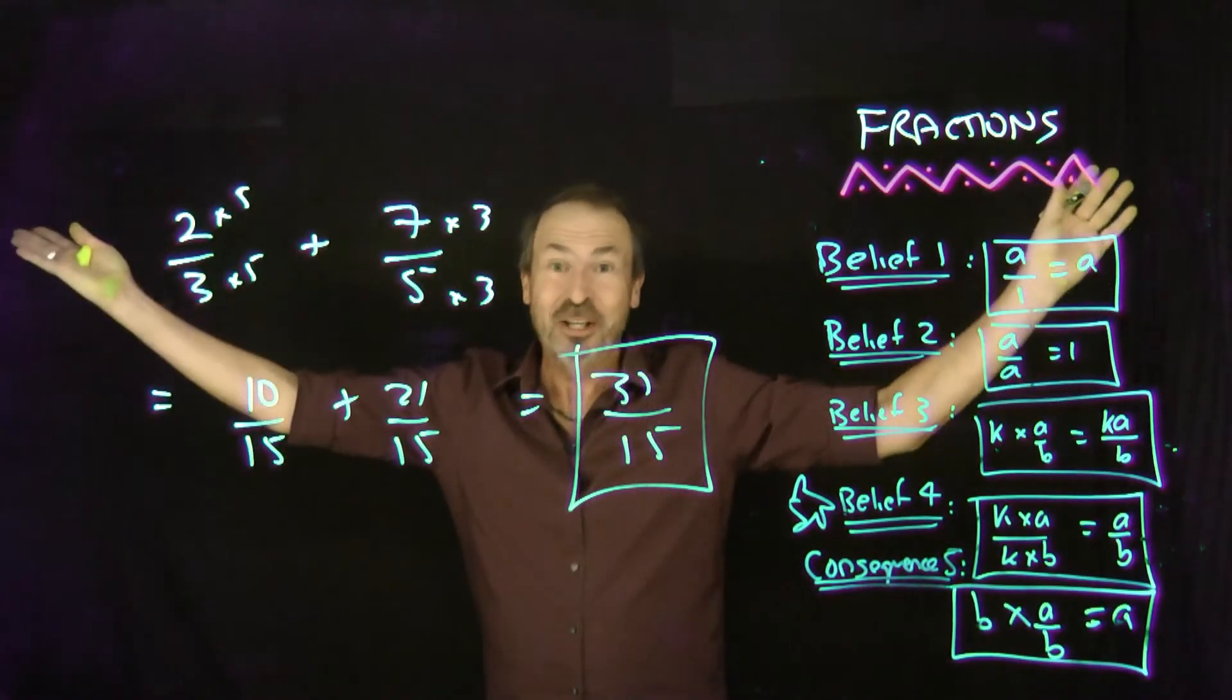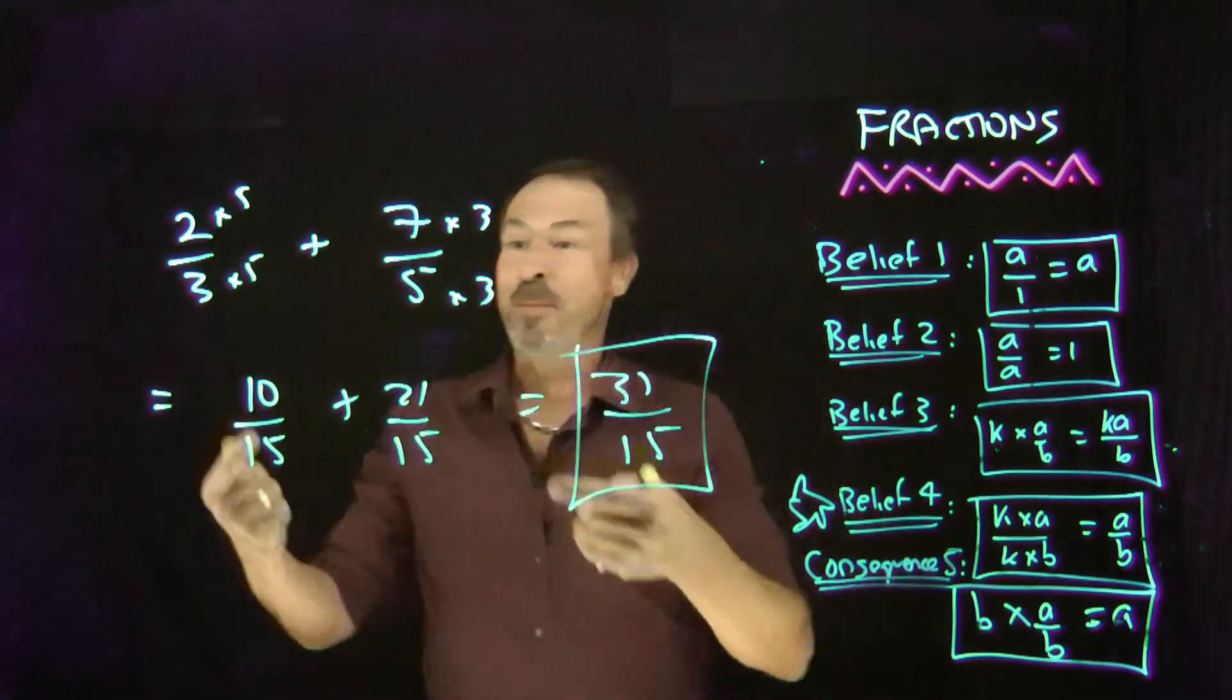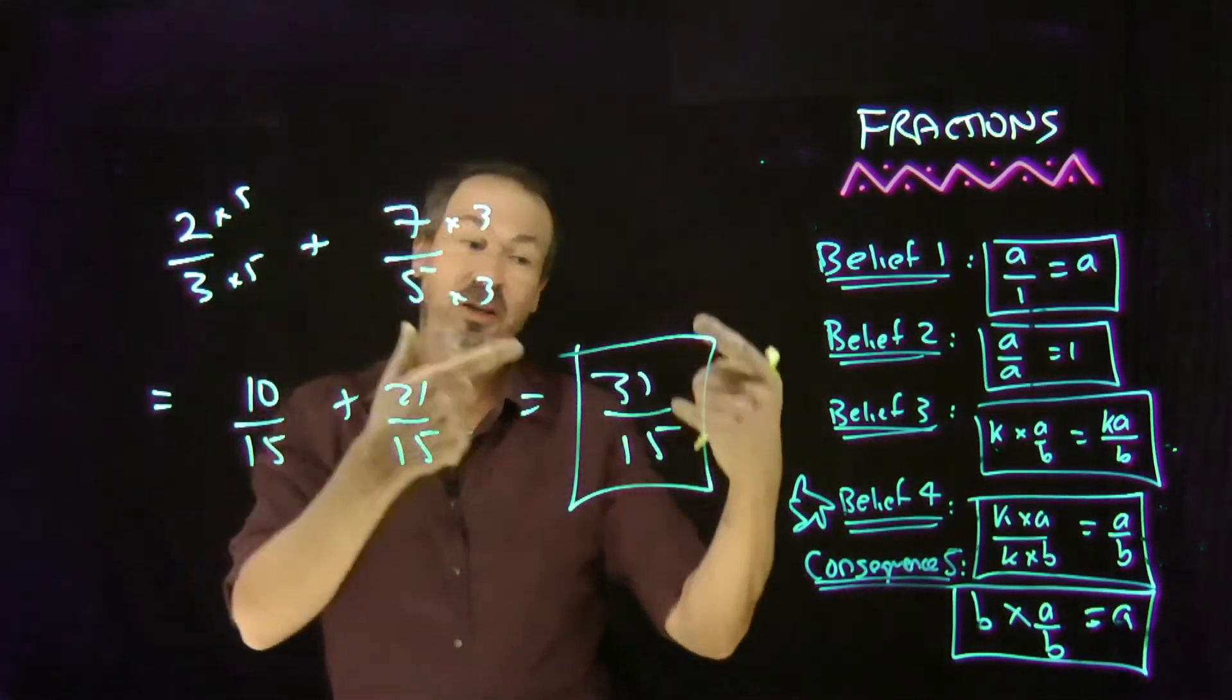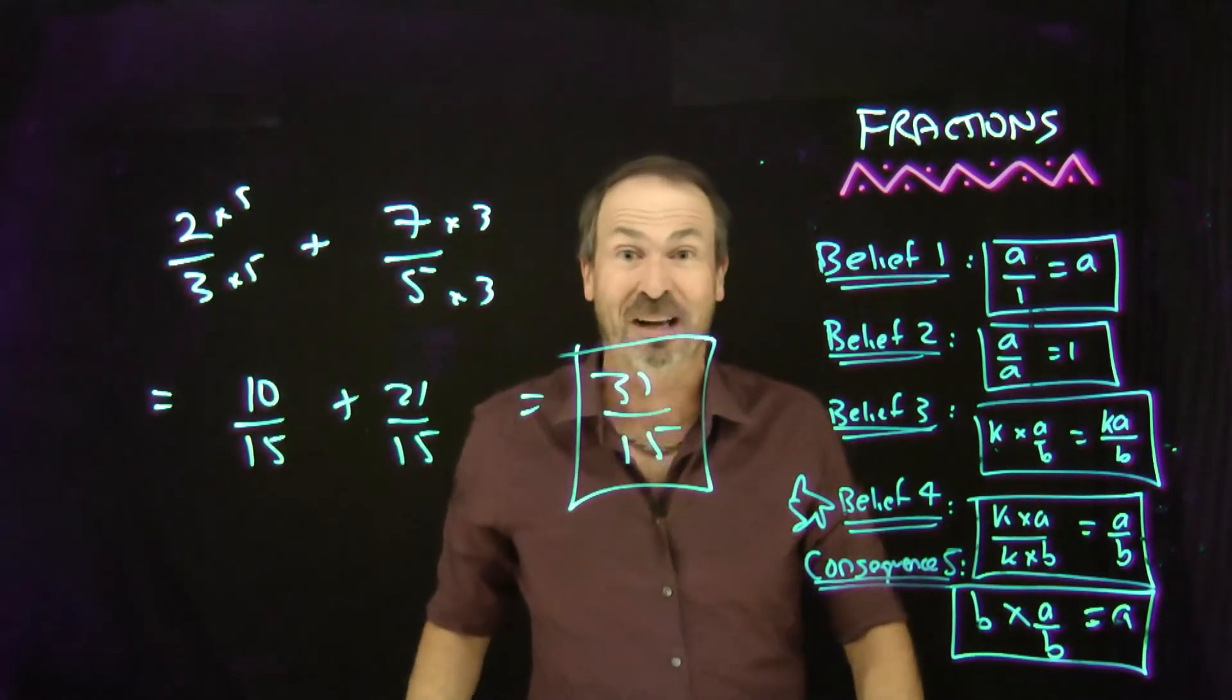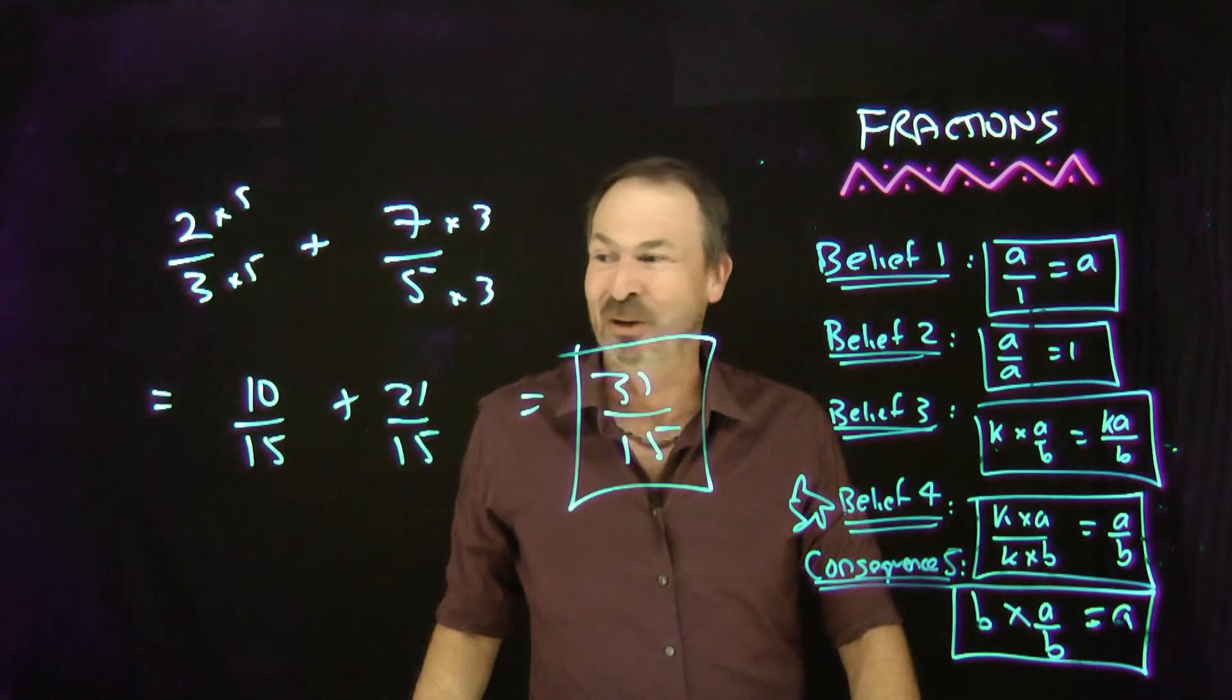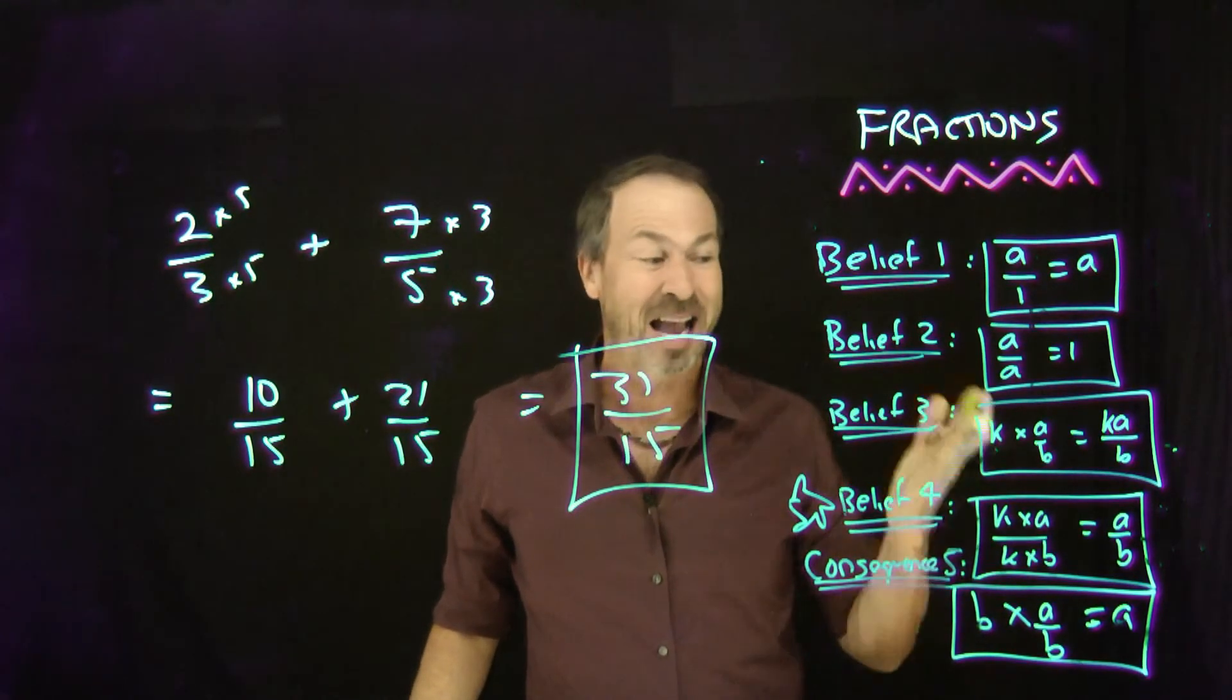So actually, we've got addition of fractions. It's right there. Maybe we want to make a common denominator first and then just do it as we read because we prove that works. Or just do it in general by, I don't know, following your nose like I first did on this video. All is good. All is consistent. All hangs together. And it's all there.